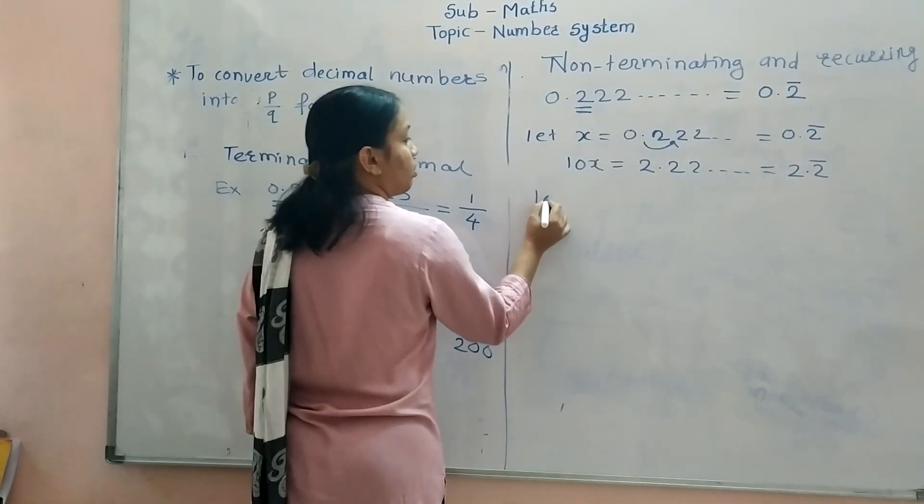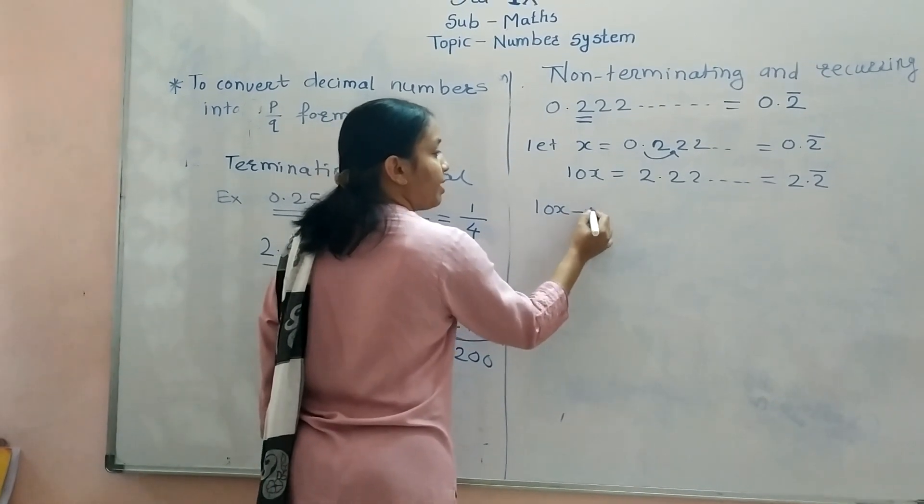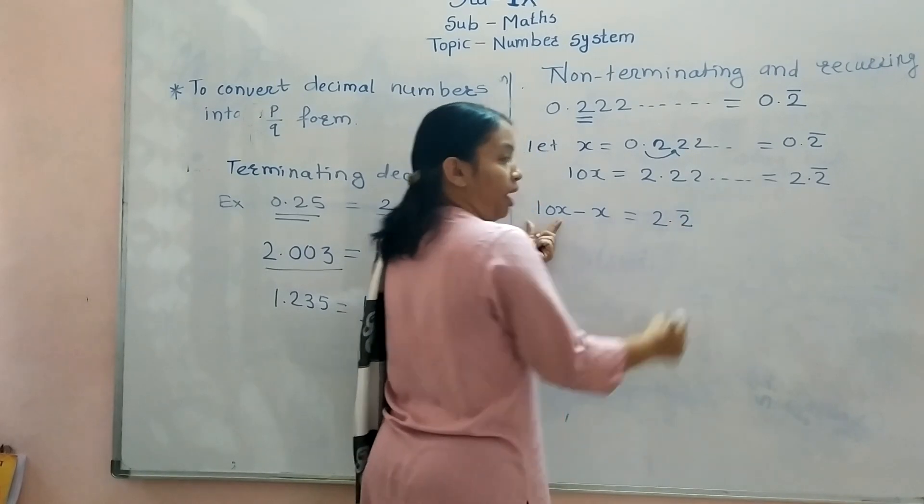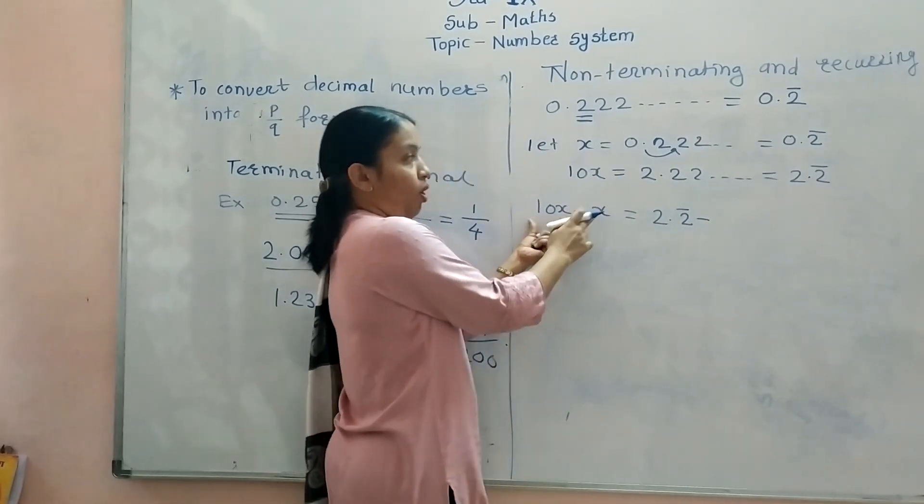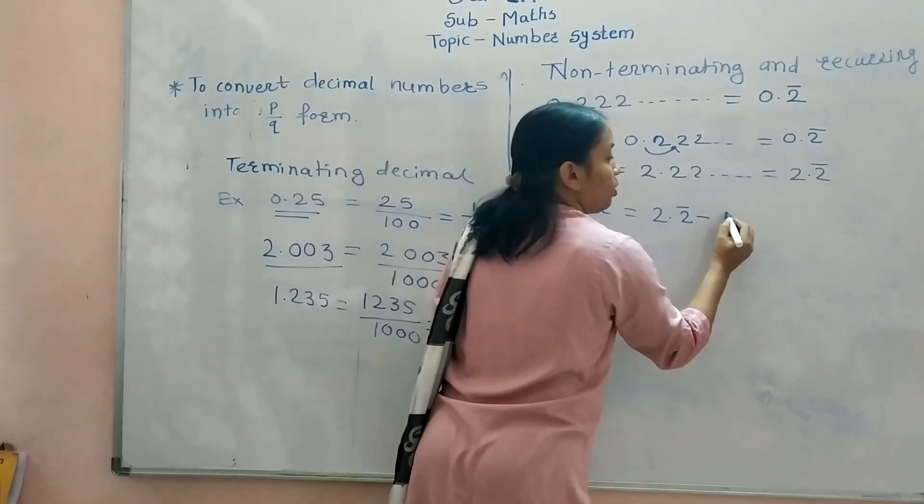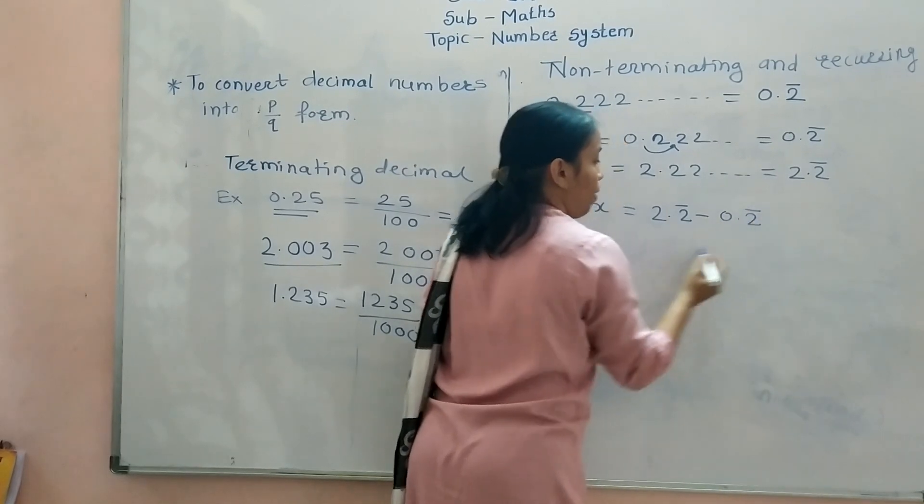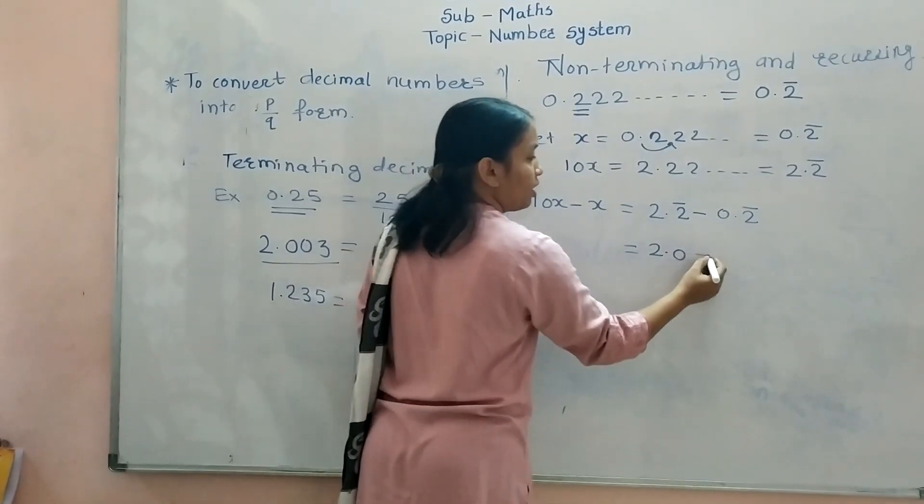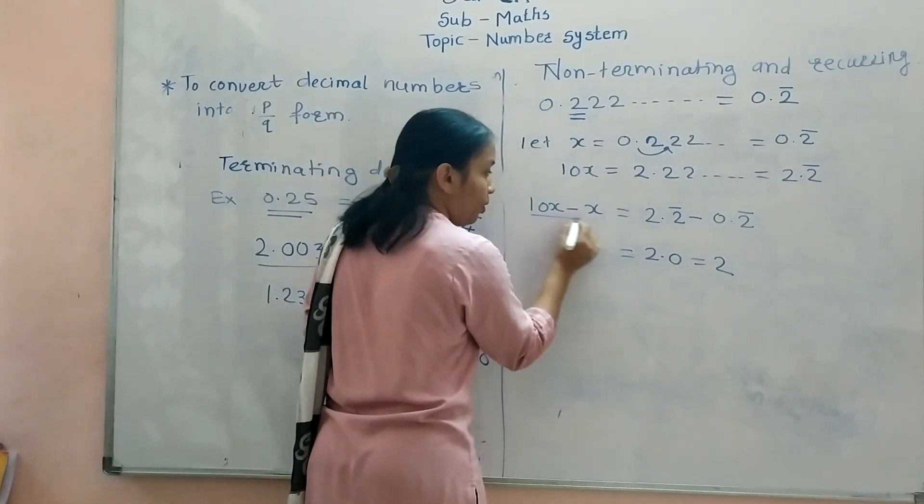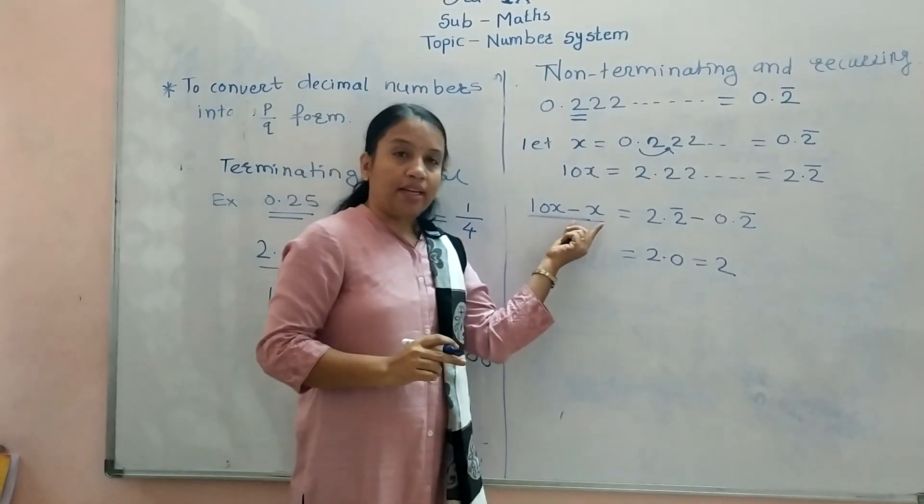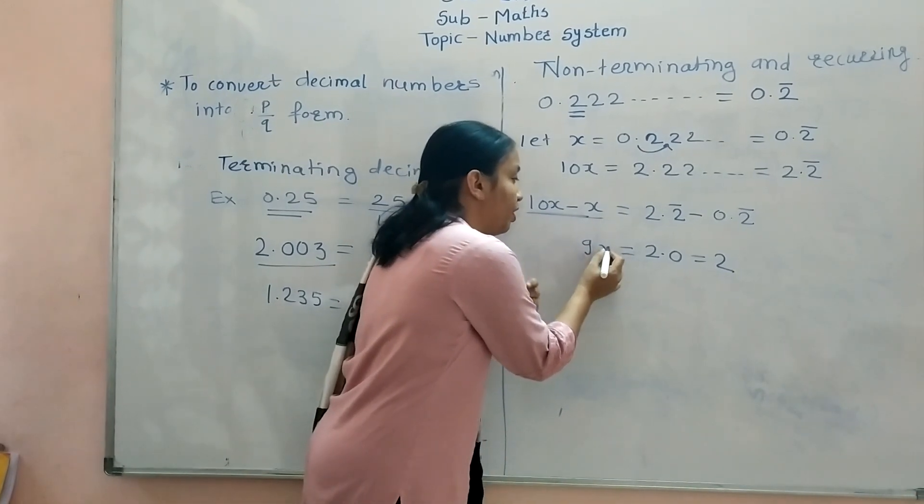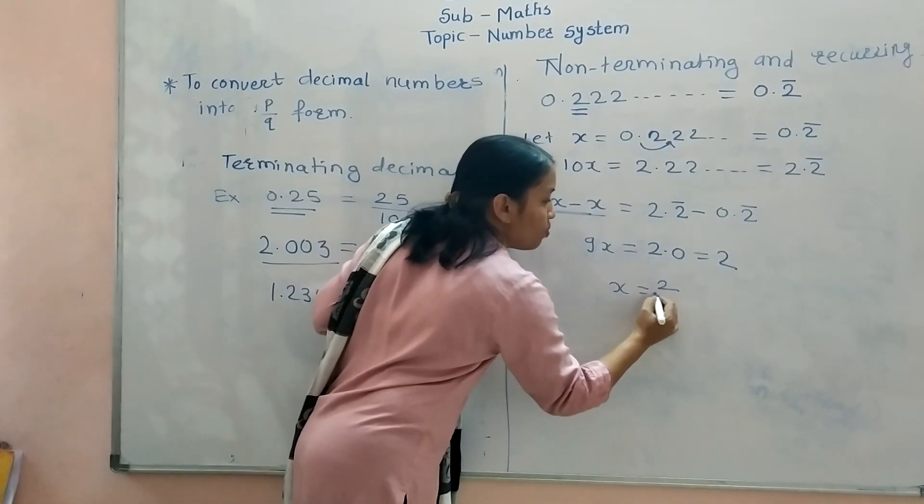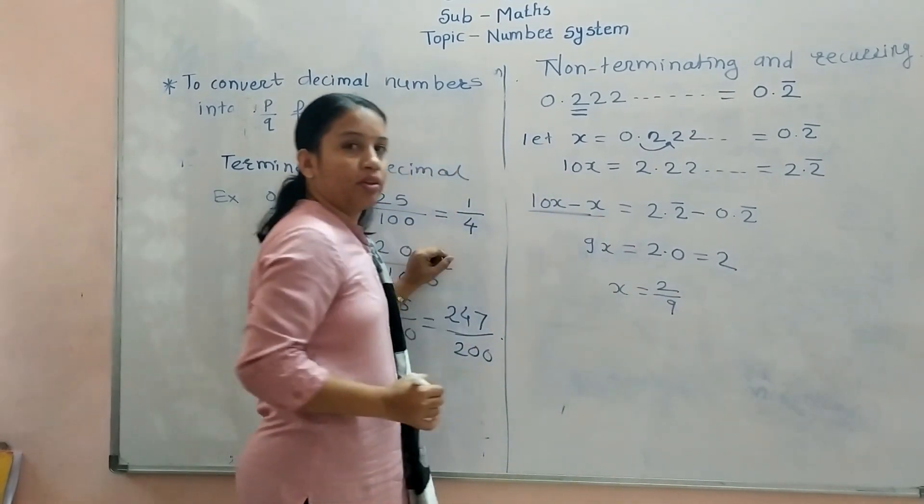Now, take 10x minus x. Now, what is the value of 10x? 2.2 bar. And what is the value of x? That is 0.2 bar. If you subtract, you will get 2.0, that is nothing but 2. And here, 10x minus x is equal to 9x. Now, what is the value of x? x is equal to 2 by 9.